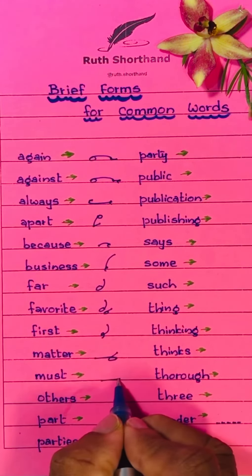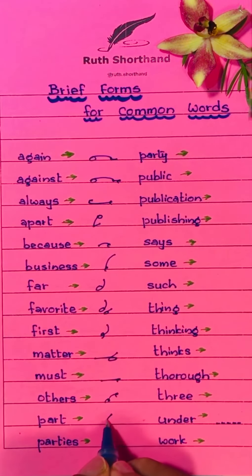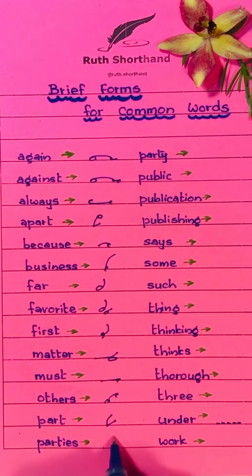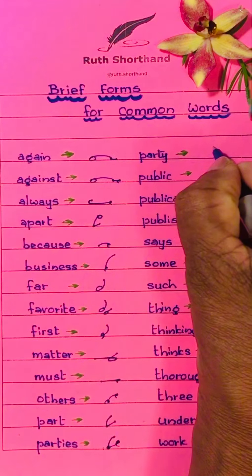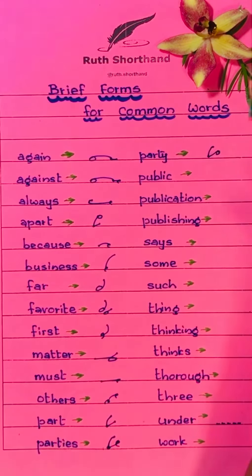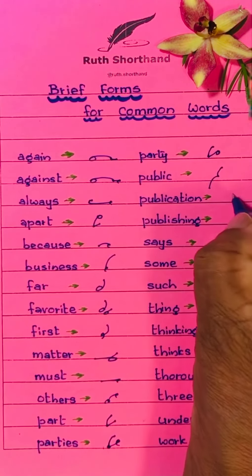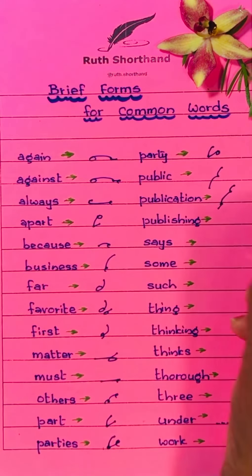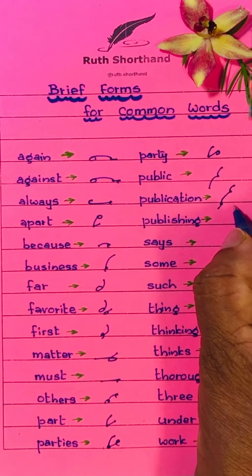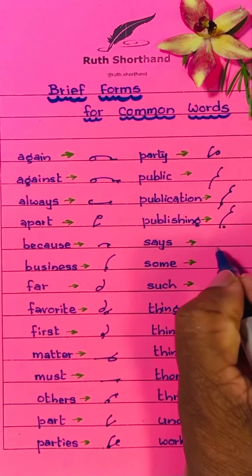Must, others, part, parties, party, public, publication, publishing. Here are the brief forms for parties, party, public, publication, and publishing.